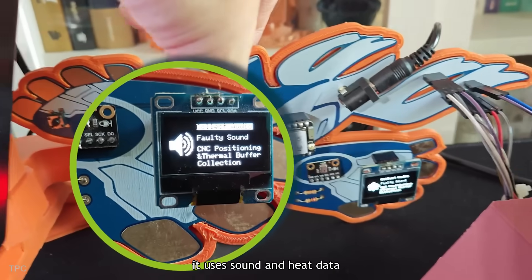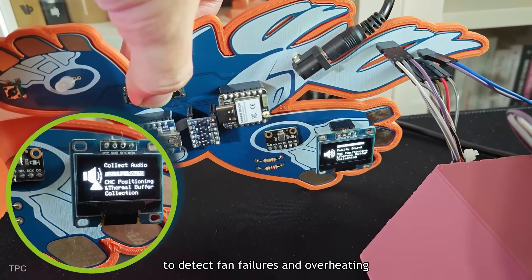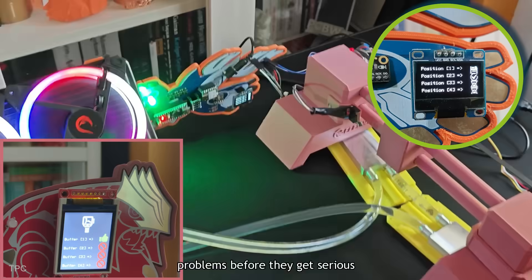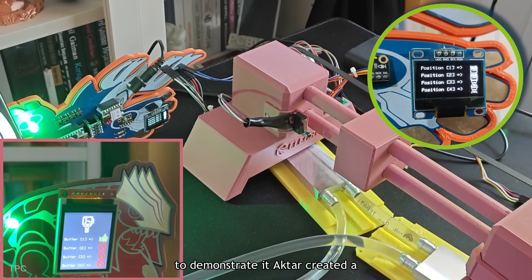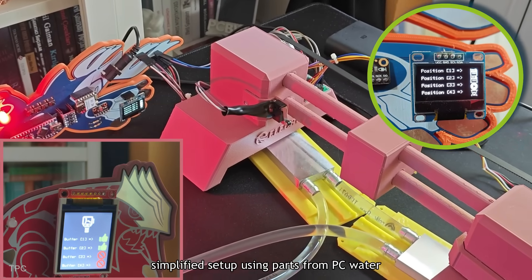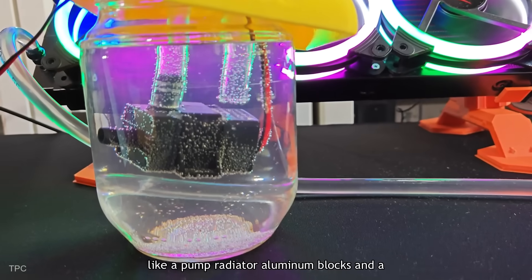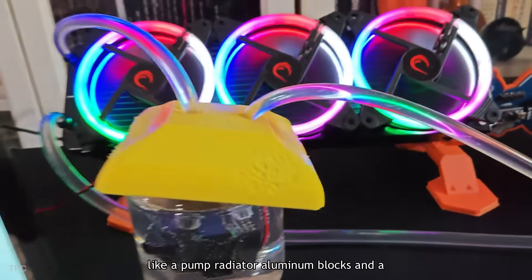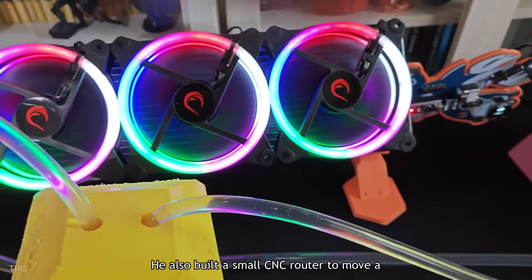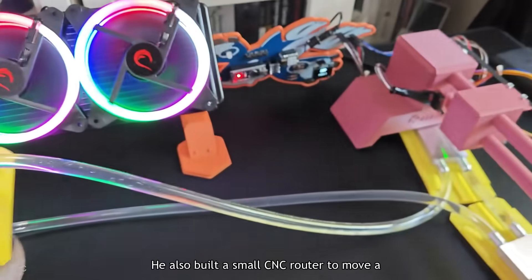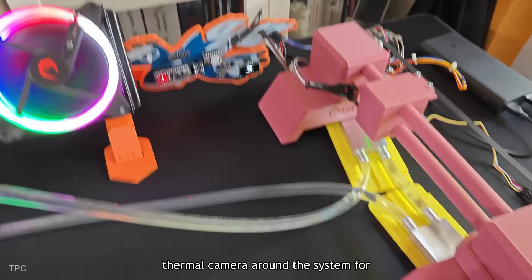Number 5. This project is an AI-powered diagnostic system for water-based HVAC cooling setups. It uses sound and heat data to detect fan failures and overheating problems before they get serious. To demonstrate it, Akhtar created a simplified setup using parts from PC water cooling systems, like a pump, radiator, aluminum blocks, and a custom 3D-printed coolant tank. He also built a small CNC router to move a thermal camera around the system for scanning.